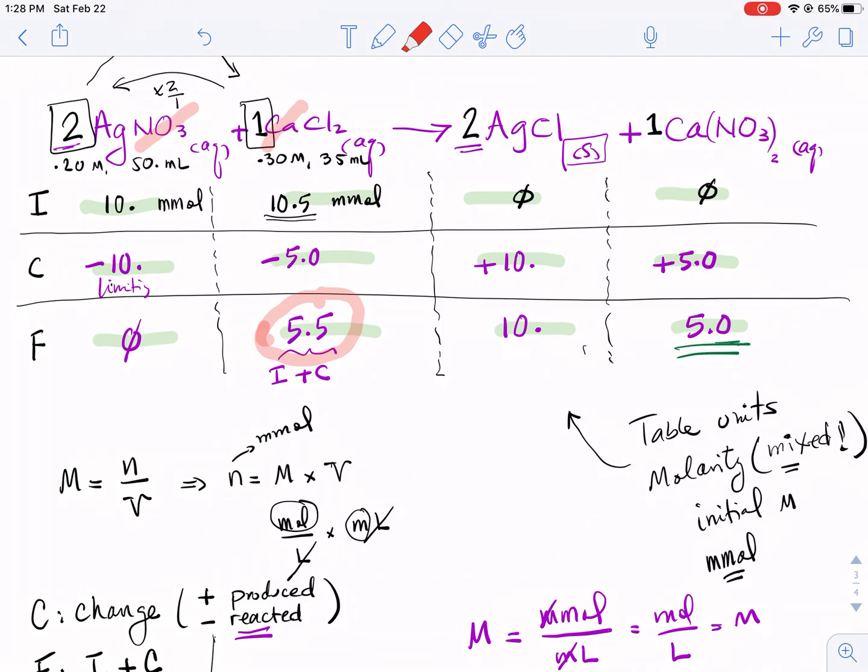Okay, I was cut off in the last video because I exceeded my 20 minute time limit, but let's go ahead and solve the problem. We have, look at the final line, 5.5 millimoles of calcium chloride and we have 5 millimoles of calcium nitrate.